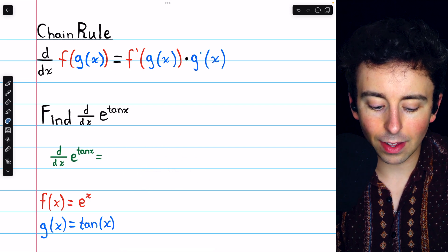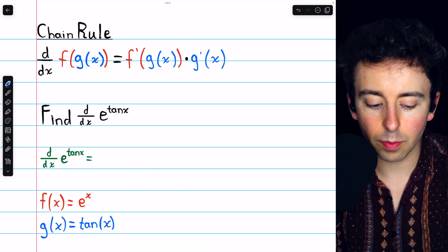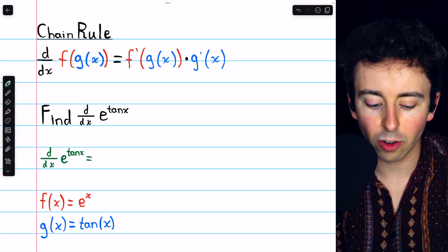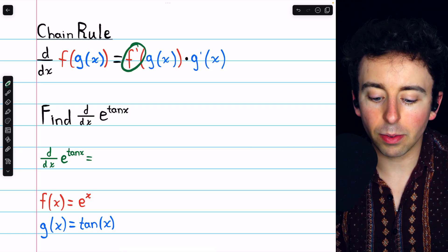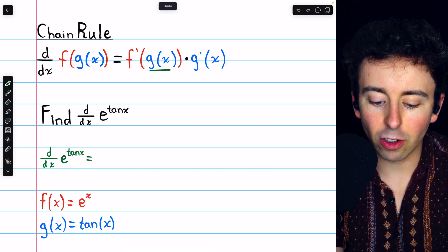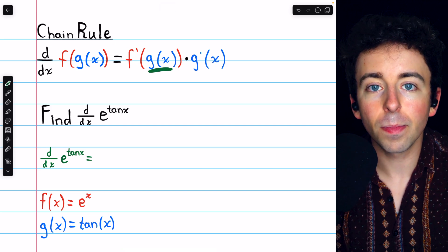Now we can apply the chain rule to find the derivative of e to the power of tangent x. We need to begin with f prime, the derivative of the outside function, and leave that g of x, the inside function, unchanged.